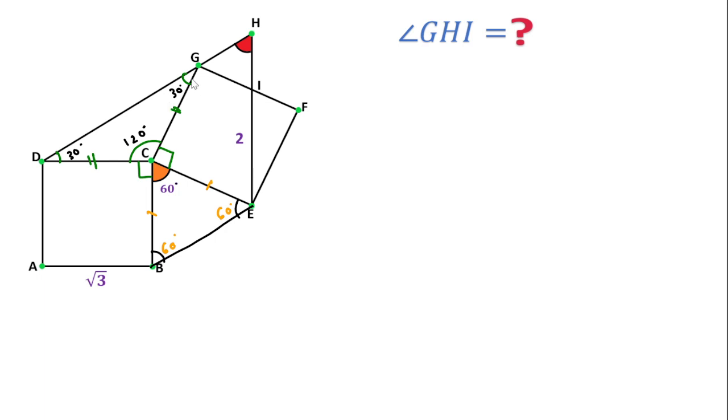This angle will be 90 degrees. So 90, 30, 120 - this means this angle will be 60 degrees. And this angle will also be 90 degrees.